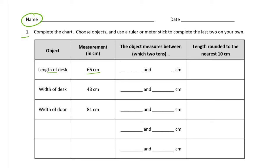So 66 is in between—on the low end it would be 60, and on the high end it would be 70 centimeters. And to the nearest 10 centimeters, 66 is closer to 70 than 60 because it's only four away from 70 but six away from 60, so it's 70 centimeters.